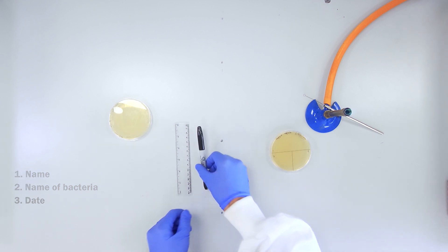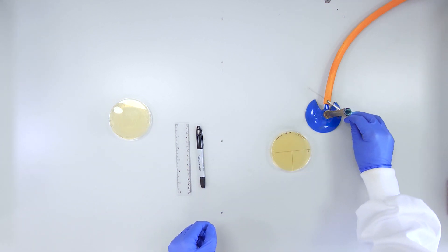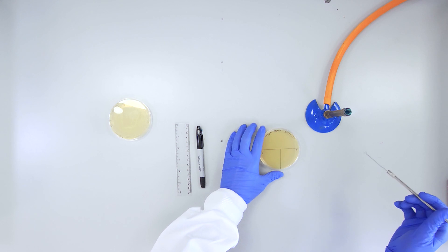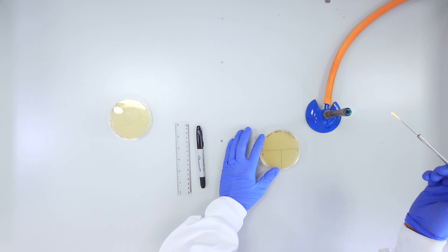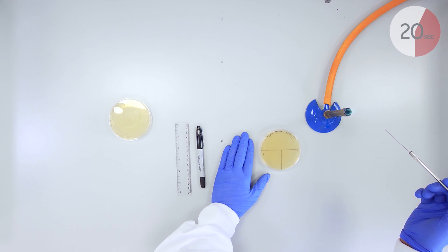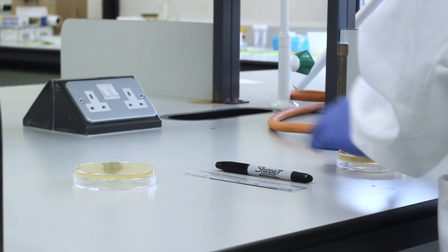Before beginning, you must sterilize your inoculating loop using the Bunsen burner. Place the loop into the middle of the flame until it is red hot. Remove from the flame and allow to cool for 20 seconds in order to avoid killing the bacteria that you will pick up using this loop.